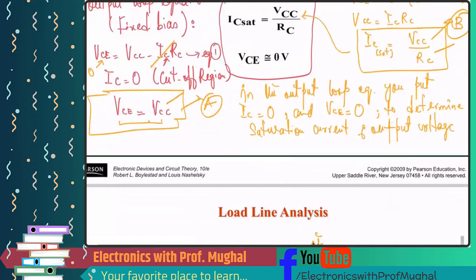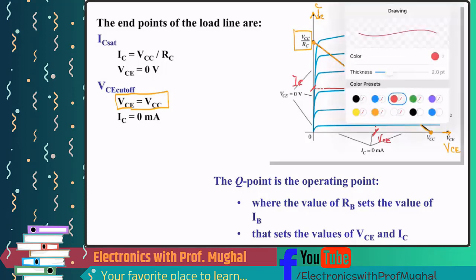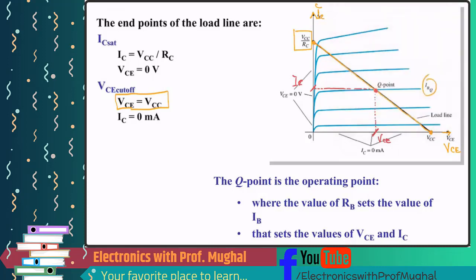These VCE and IC values should match the values you get from the equations. That's not the only advantage of load line analysis — it tells you whether you've done the analysis right or wrong, but it also tells us how we can change the Q point. For example, if I want to move my Q point to a different location, load line analysis shows how to do that.